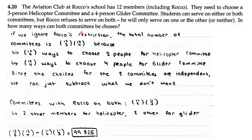If we ignore Rocco's restriction — that he will only serve on one or neither — the total number of committees is C(12,3) times C(12,4), because C(12,3) is the number of ways to choose three people for the helicopter committee and C(12,4) is the number of ways to choose four people for the glider committee. Since the choices for the two committees are independent, we can simply subtract the cases we don't want.